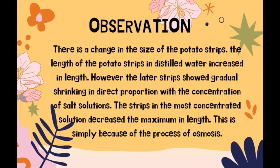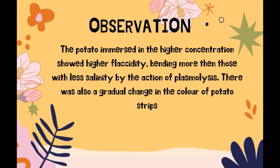The length of the potato strip in the plain water increased, while the latter strips showed gradual shrinking in direct proportion with the concentration of the salt solution. The strips in the most concentrated solution decreased the maximum in length. The potato immersed in higher concentration showed higher flaccidity, bending more than those with less salinity, by the action of plasmolysis. There was also a gradual change in the color of the potato strips.